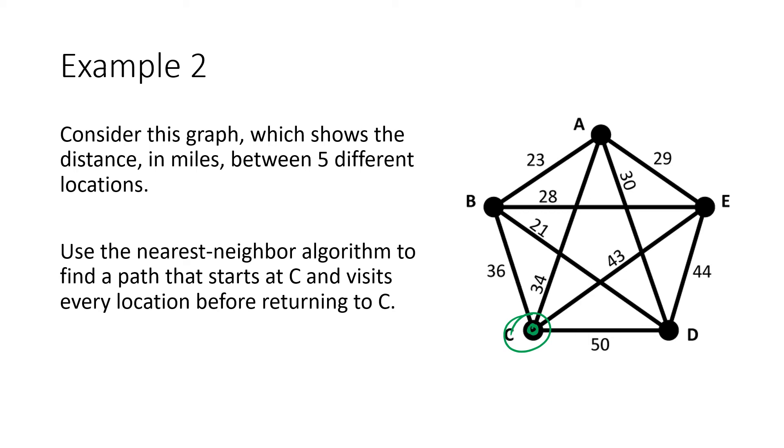But we're starting at C. And so again, what that means is we're going to look at the distances. In this case, these are distances in miles from C to the other locations. So we're looking at this 36 from C to B, 34 from C to A, 43 from C to E, and 50 from C to D. And among those four numbers, we're just going to choose the lowest number, which in this case is 34. So that means our first step is to walk along this edge from C to A. And now we're at A.